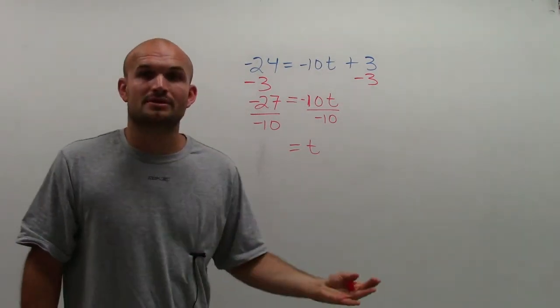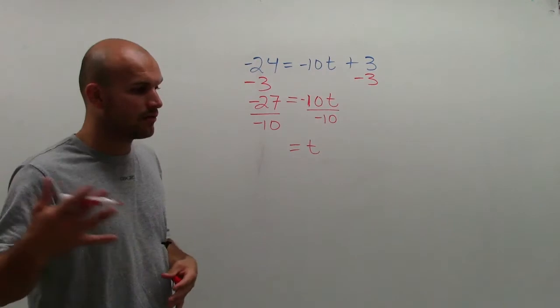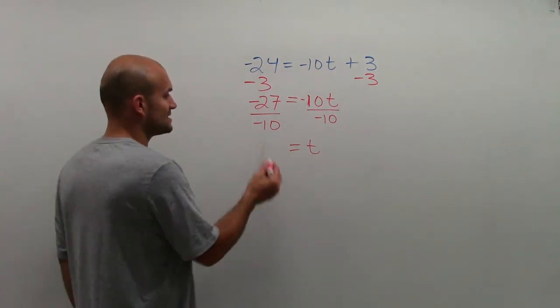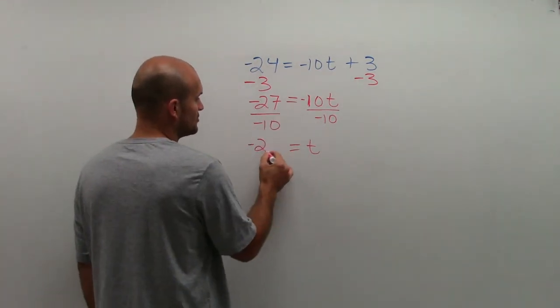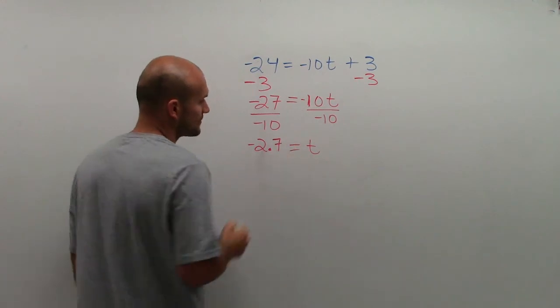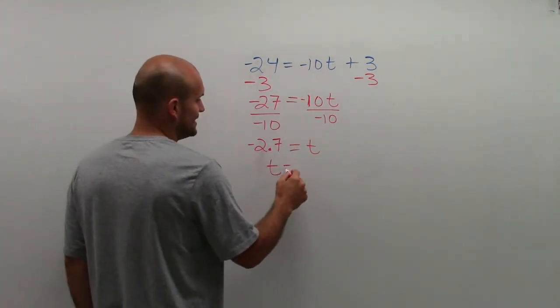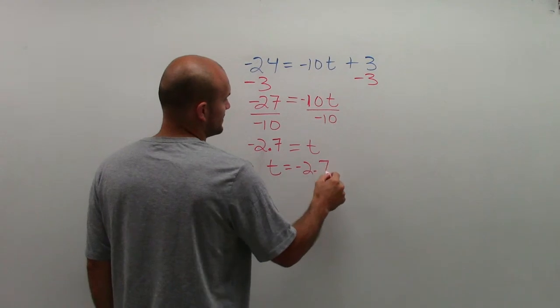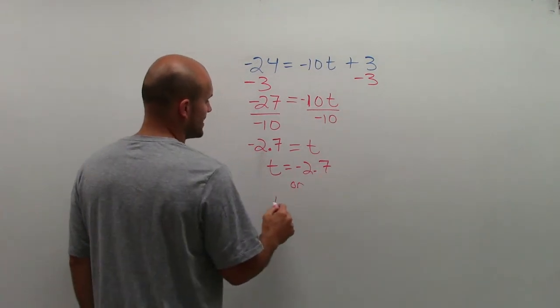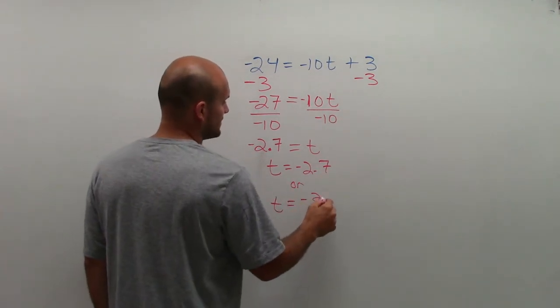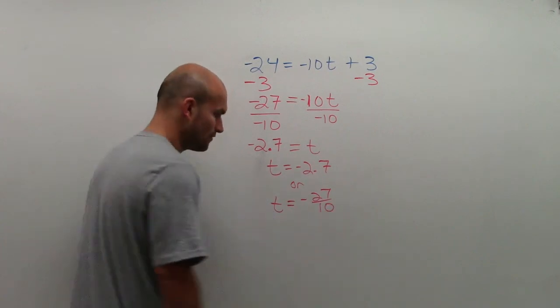As a teacher, I personally like you guys just leaving it as fractions. However, your teacher might want you to write it as a decimal. So writing this as a decimal could be negative 2.7. And then we could just rearrange it as t equals negative 2.7. Or we can just write it as a fraction t equals negative 27 over 10.